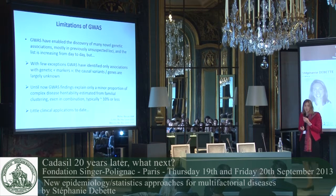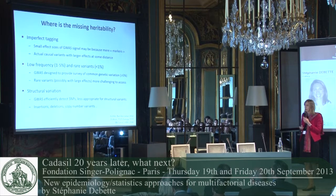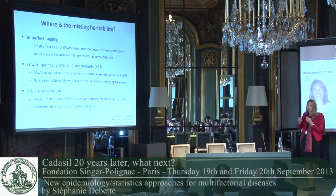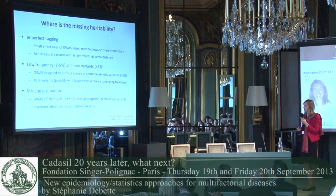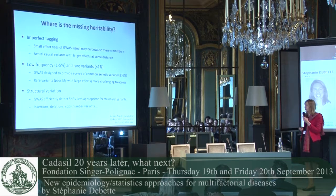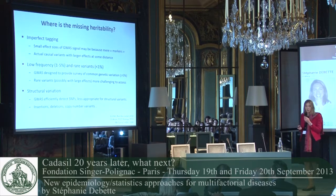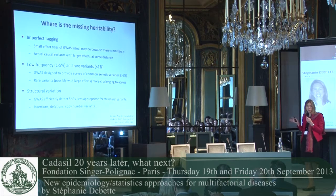The second criticism is that these findings explain only a small proportion of the heritability. Where could the missing heritability be? One explanation is that the tagging is imperfect — if we could look at the actual causal variants, the effect size and heritability explained could be larger. GWAS have also been looking mostly at common variants, and it will be important to explore low frequency and rare variants. Additionally, GWAS are not very good for capturing structural variants such as copy number variants, which have been shown to be important in several complex diseases, especially psychiatric disorders such as autism.